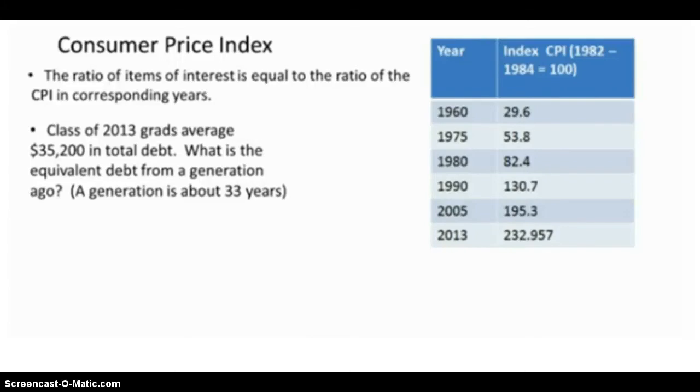The key to solving consumer price index problems is knowing that it is a ratio and proportion problem. The ratio of items of interest is equal to the ratio of the consumer price index in the corresponding years.